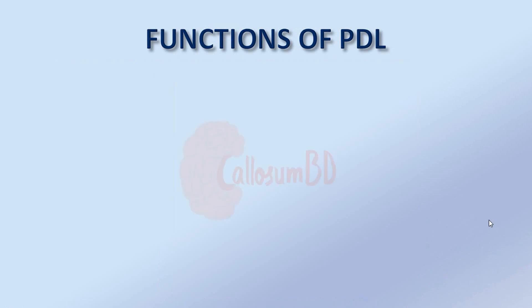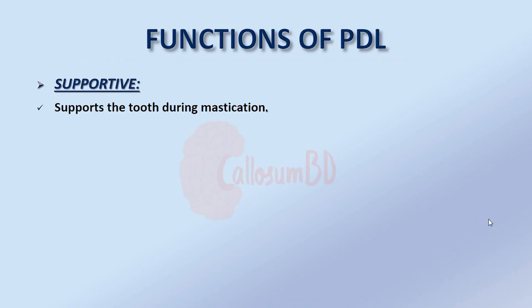The functions of the periodontal ligament: First, the supportive function. The periodontal ligament supports the tooth during mastication. Any masticatory force or orthodontic forces that move the tooth in the socket cause the periodontal stress to be absorbed. When the periodontal ligament is compressed, it supports the teeth and acts as a cushion for nerves and blood vessels.